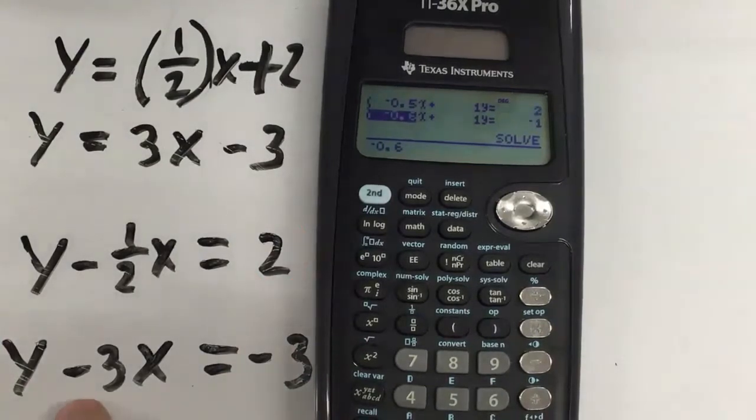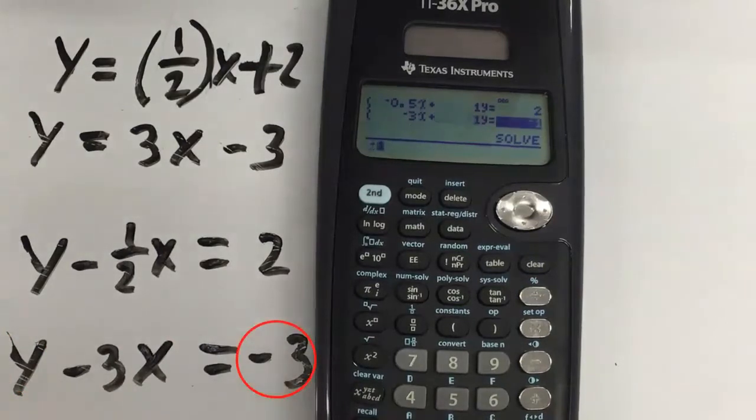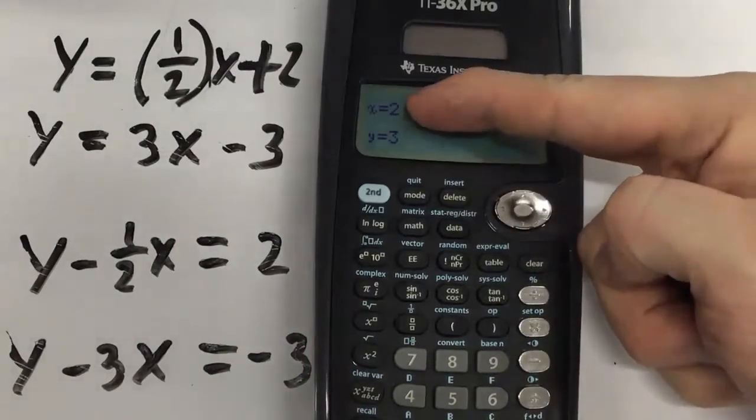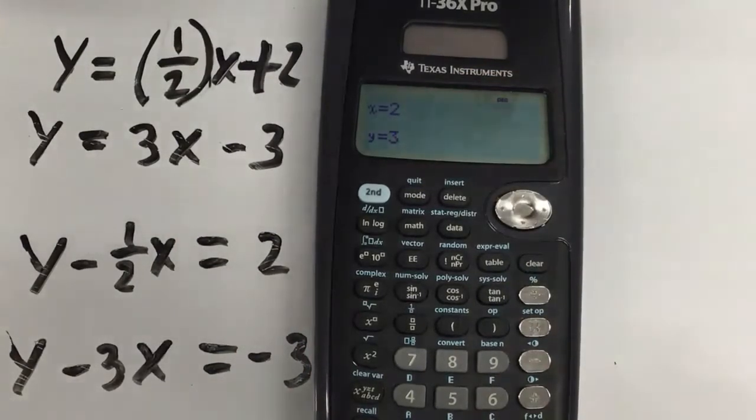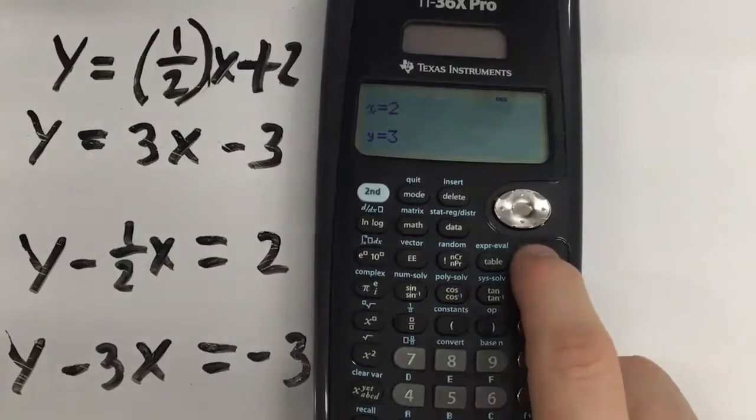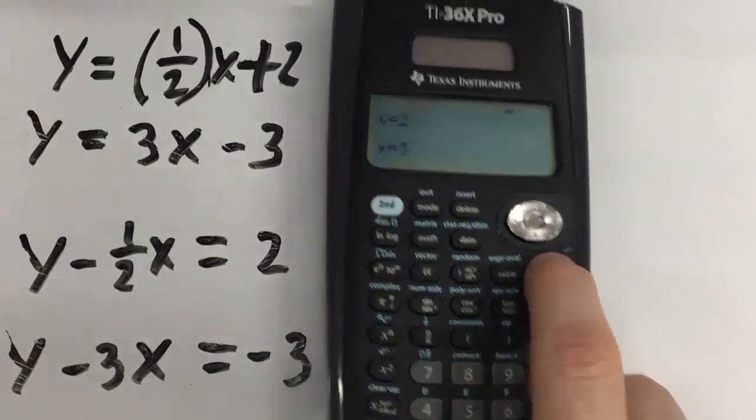So now we have negative three, positive one, and a negative three. I come here to solve. And it says, my X answer is two, and my Y answer is three. Pretty straightforward using TI-36X Pro.